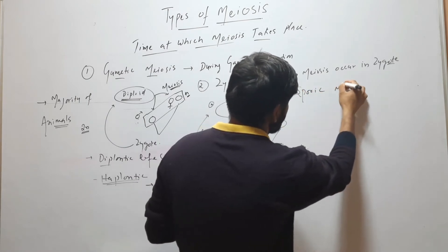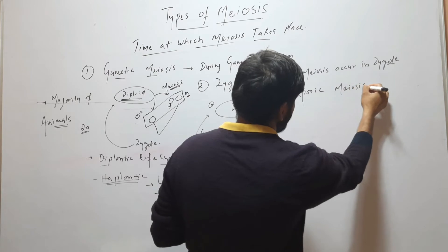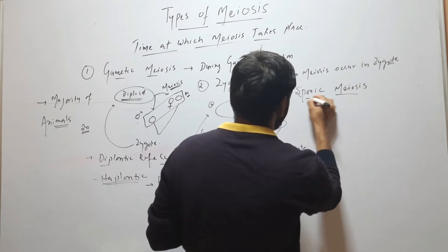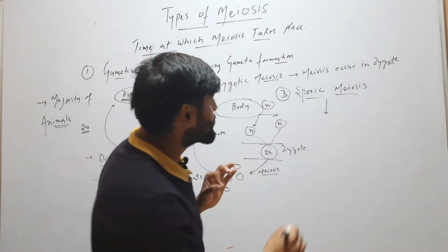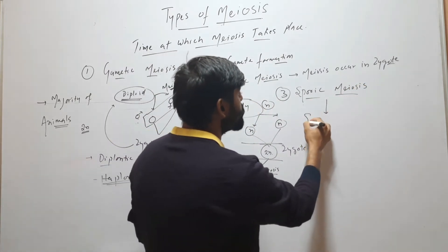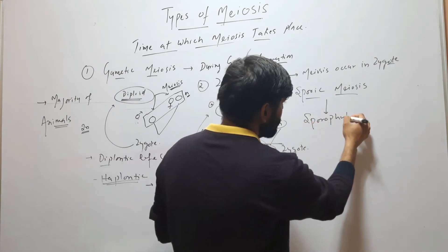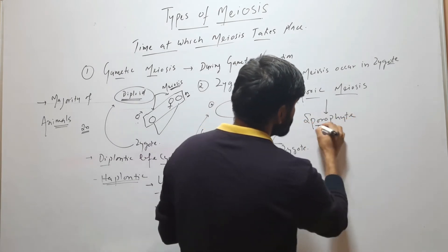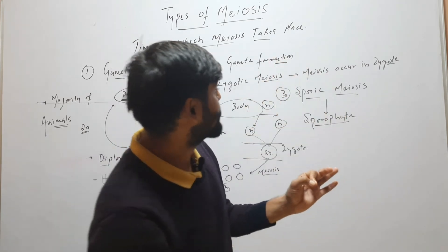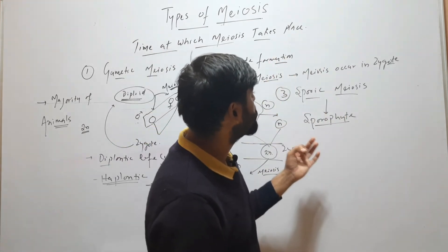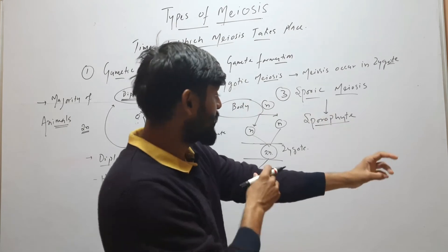Zygotic meiosis occurs in organisms which have a haplontic life cycle. Our third and last type is sporic meiosis, in which meiosis occurs in the sporophyte. When meiosis occurs in the sporophyte, this type of meiosis is called sporic meiosis.